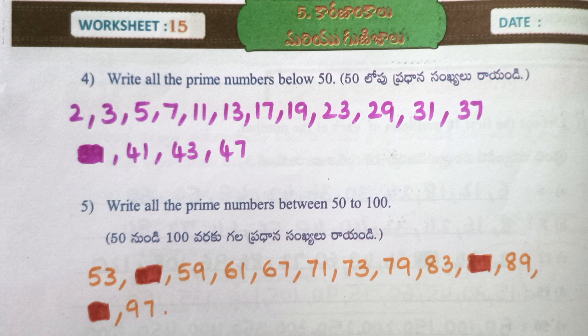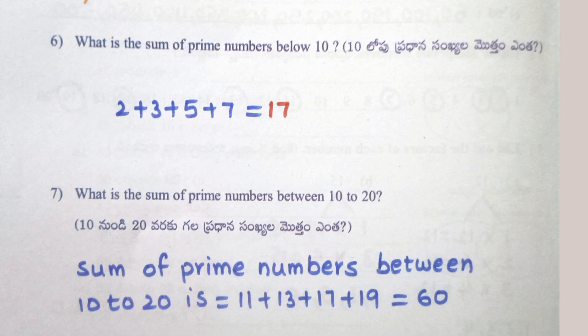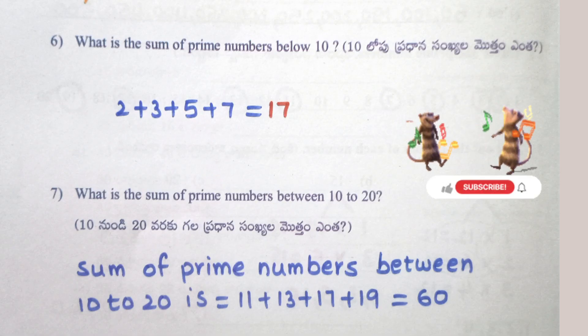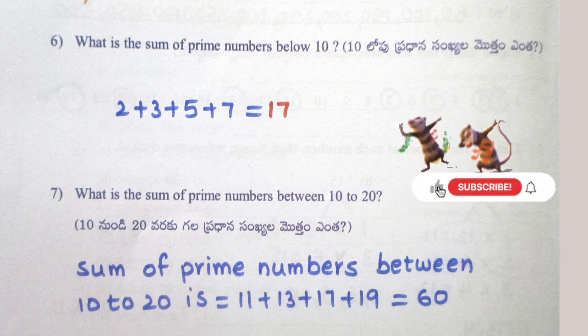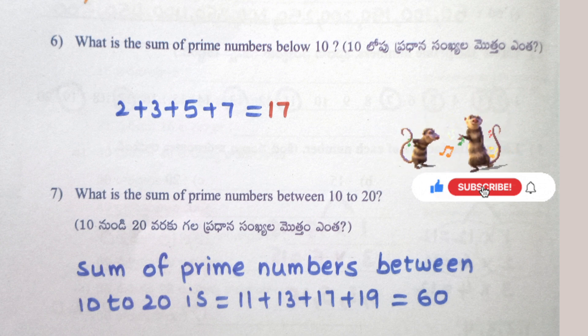Write all the prime numbers between 50 and 100: 53, 59, 61, 67, 71, 73, 79, 83, 89, 97. Write the sum of prime numbers below 10: 2 + 3 + 5 + 7 = 17.